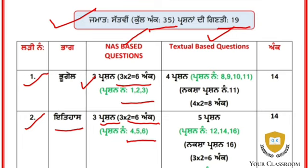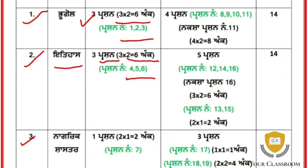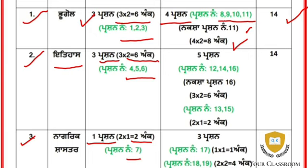In civics there will be 1 question for 2 marks, which is question number 7, totaling 7 marks. Then there are textual-based questions — 4 questions numbered 8, 9, 10, and 11. There will also be a map-related question worth 8 marks. The total marks for this section will be 14.